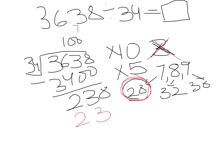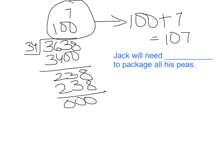Then I multiplied it and it came to 238 exactly. So I saw that it was 7, and therefore the answer was 107. Jack will need 107 packets to package all his peas. That's a lot of peas in a lot of packets!